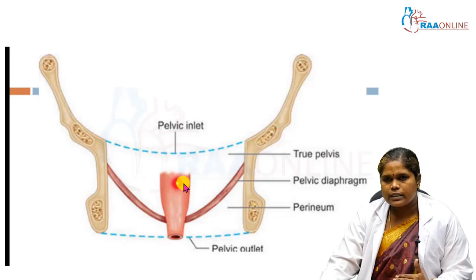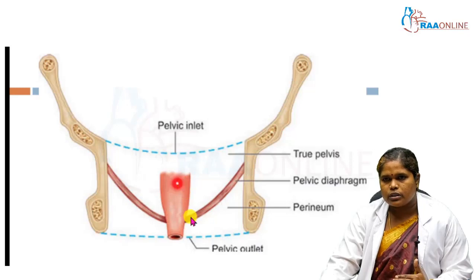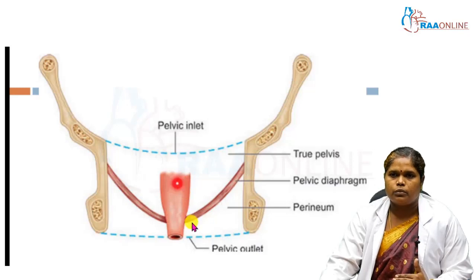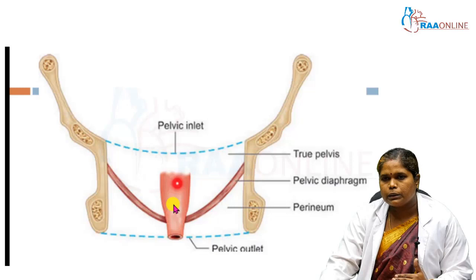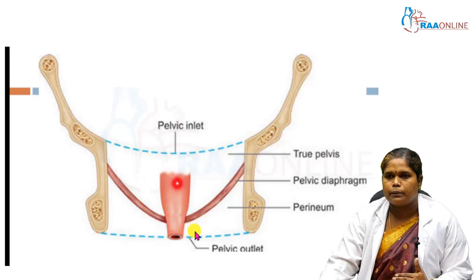Now we see a sling-like structure here, like a gutter. This is known as the pelvic diaphragm. Whatever structures are present within the pelvic cavity have to pierce this pelvic diaphragm to enter below and open to the exterior.